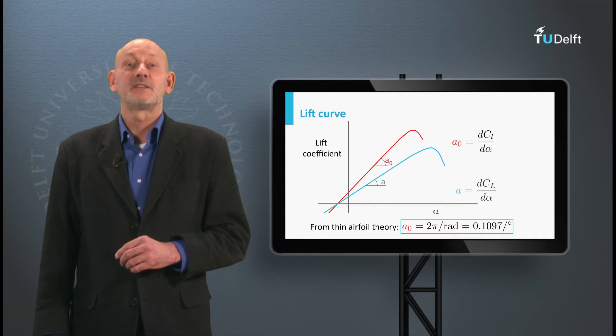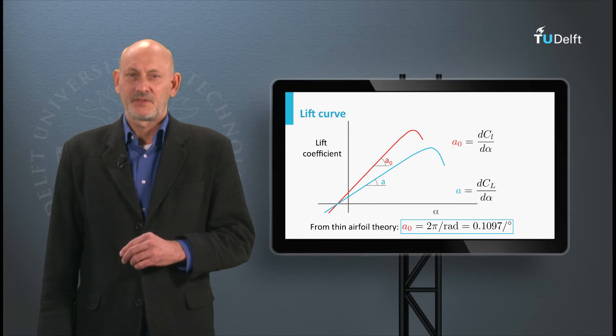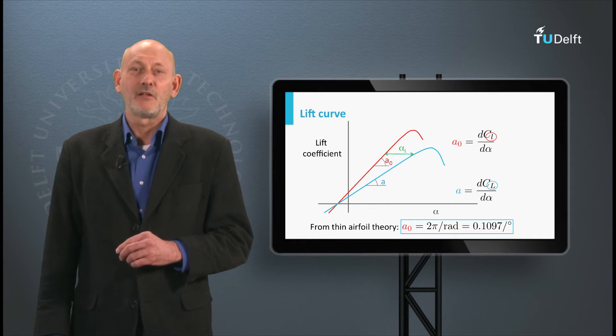The actual wing has a lift gradient a and it has the same lift coefficient as the airfoil, but at a different angle of attack. The difference being the induced angle alpha_i. Note the capital L for the wing and the small l for the airfoil.